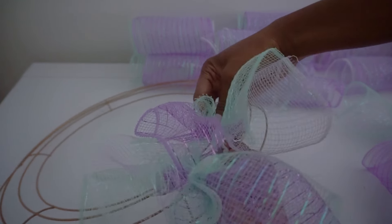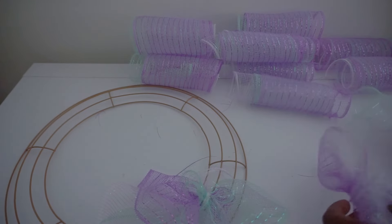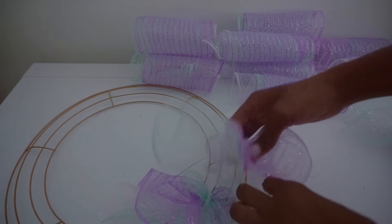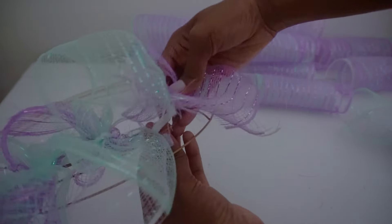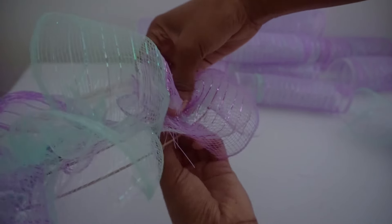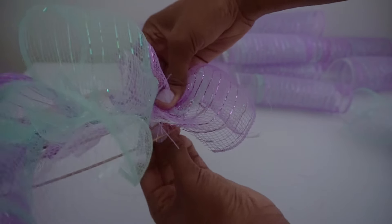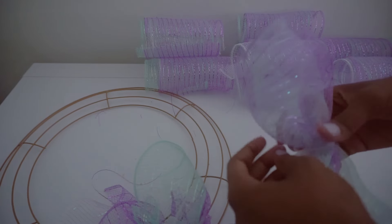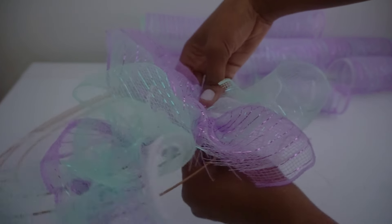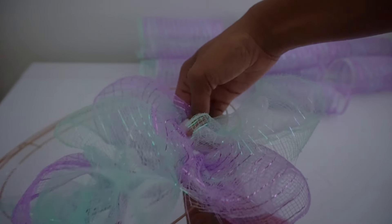And I'm just going to continue alternating just like that. So back to the outer ring, twist it and tuck it away. And then back to the inner ring, twist it and tuck it away. And then once you get all the mesh placed, if you decide you want it larger, poofier, fluffier, you can always go back and add more mesh once you're done.